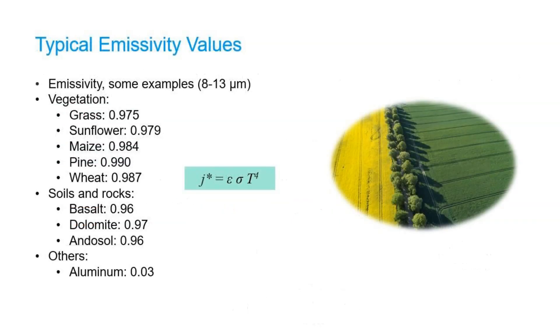Here we see some typical emissivity values in the 8 to 13 micrometer range for vegetation, soils, and aluminum.